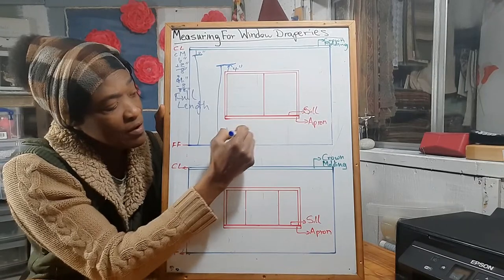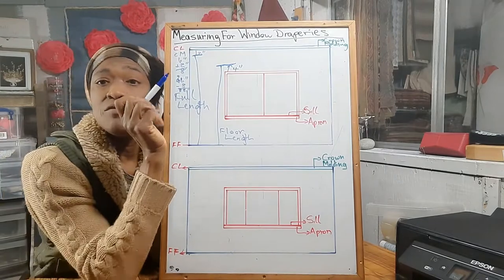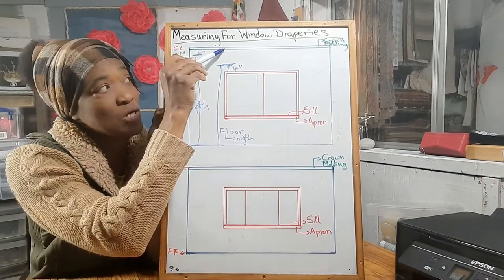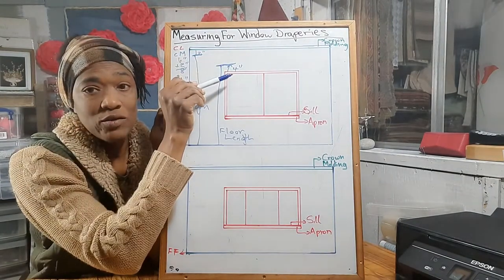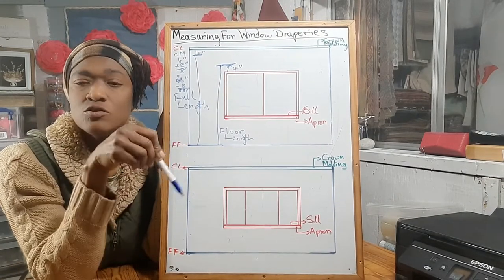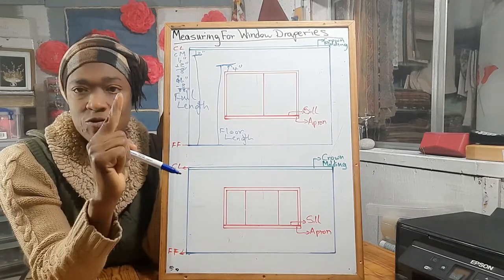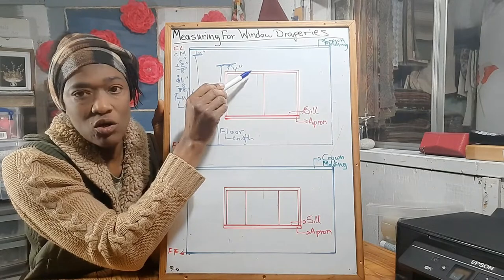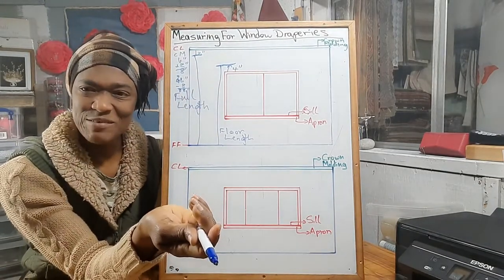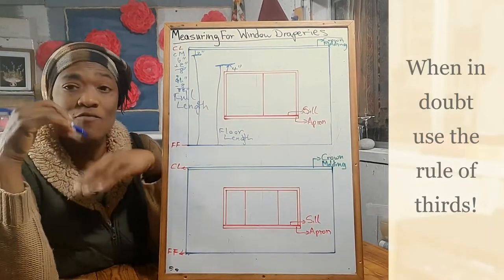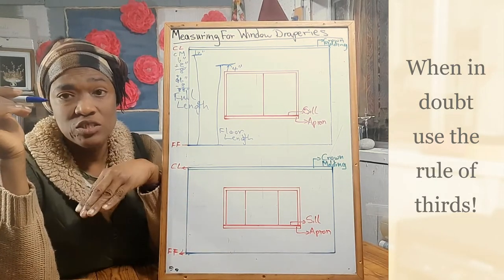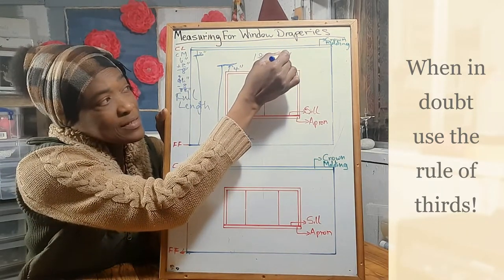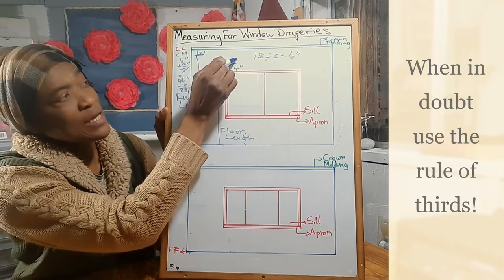There is nothing that says you could not go higher than four inches — it depends on your window and the space between your window frame and your crown molding. You could divide that space into thirds and use one third. For example, if the space is 12 inches, divide by three equals four inches. If it's 18 inches, divide by three equals six inches, so you would start from six inches above your window frame.